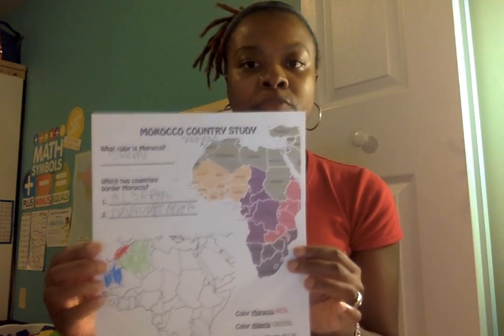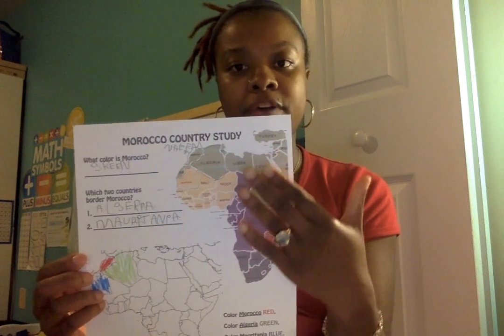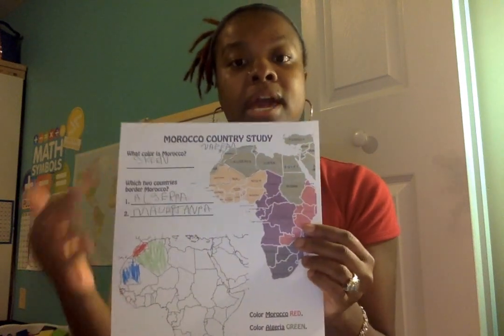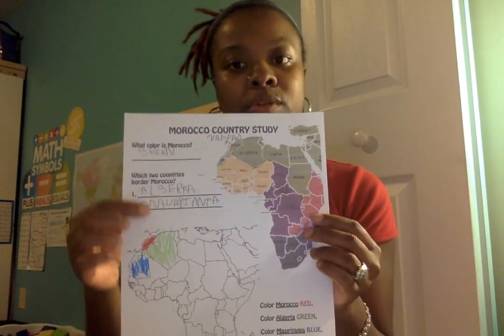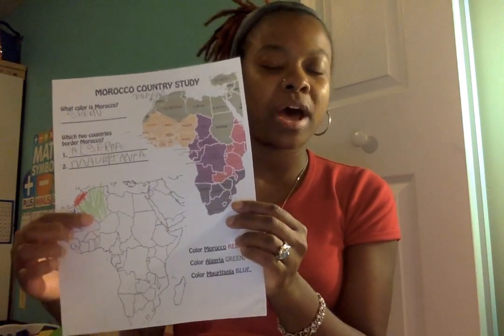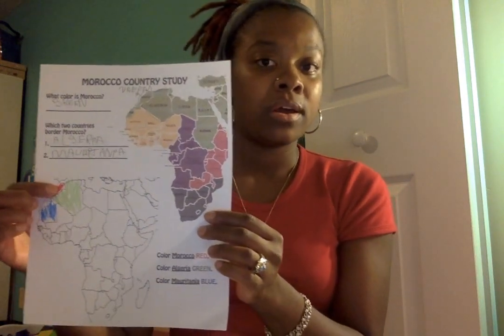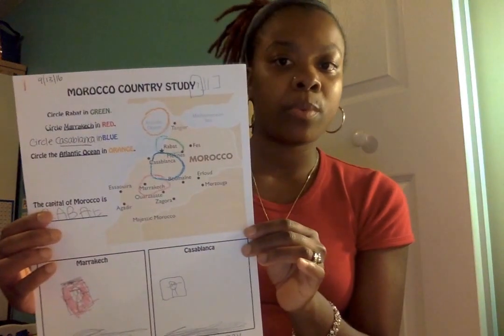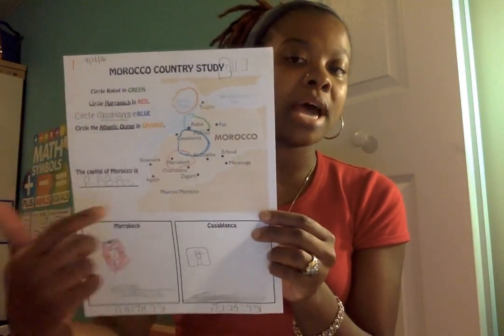Just to show you some examples of the worksheets: here's one identifying Morocco on a map and labeling it by color. And here's a blank map where they identify both the focus country and its border countries. This similar worksheet has them identify the capital and major cities and then illustrate them however they wanted — you can see the red city and the white city.